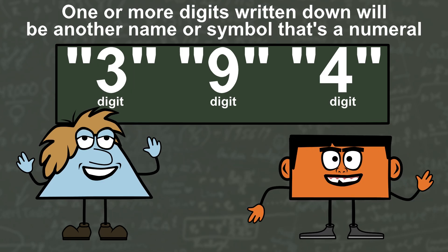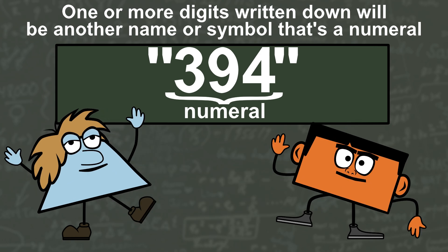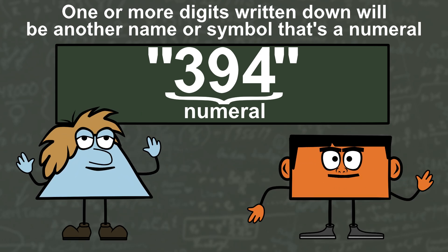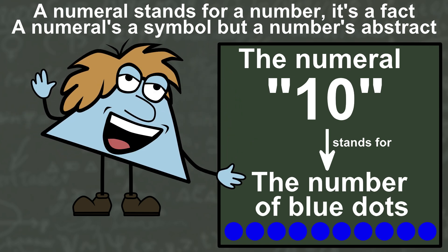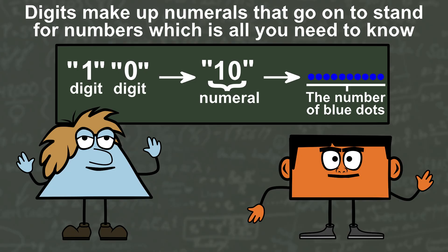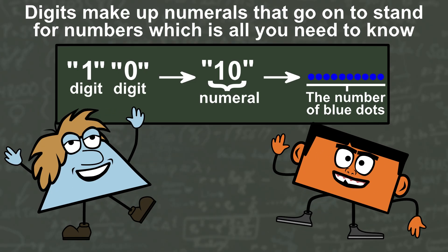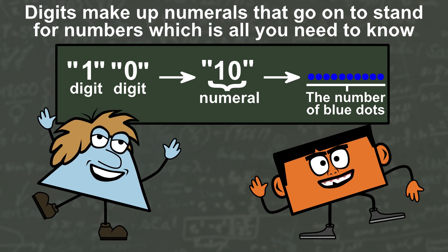One or more digits written down will be another name or symbol. That's a numeral. A numeral stands for a number, it's a fact. A numeral's a symbol but a number's abstract. Digits make up numerals that go on to stand for numbers which is all you need to know.